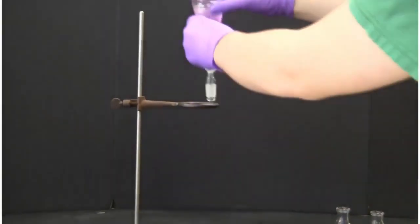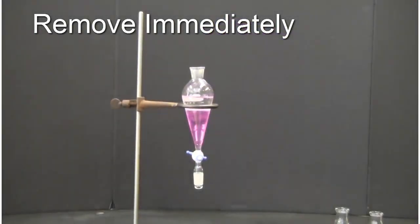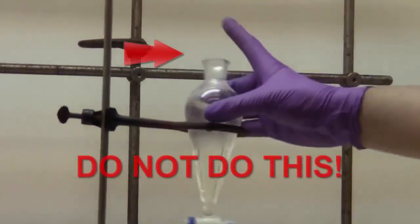The funnel is then placed back in the iron ring and the stopper is removed immediately to prevent residual pressure buildup from ejecting the stopper and solution.